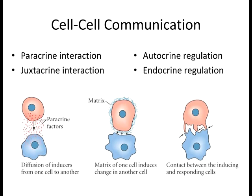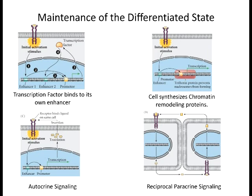Let's focus on paracrine and juxtacrine—those are the two I want you to be able to explain and describe. Here's an example of reciprocal induction in paracrine signaling where one secretes a protein that induces another, that one secretes a protein and induces back, and they just keep going back and forth.